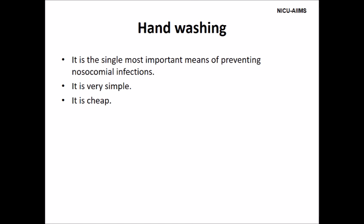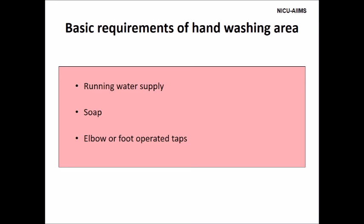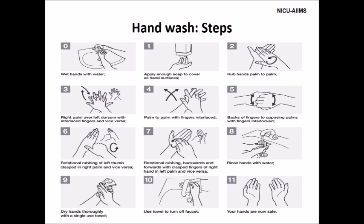Hand washing is very simple and cheap. Basic requirements of a hand washing area are: running water supply, soap, and elbow- or foot-operated tap. One minute hand washing is to be done before entering the unit. We shall now see the procedure of hand washing.